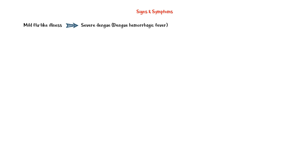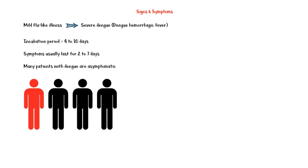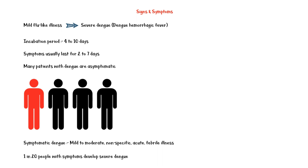The disease spectrum can range from a mild flu-like illness to a severe, life-threatening disease called severe Dengue, which was previously known as Dengue hemorrhagic fever. The incubation period of the virus is 4–10 days, and symptoms usually last for 2–7 days. Many patients with Dengue are asymptomatic — only 1 in 4 with Dengue infection become symptomatic. Symptomatic infection commonly presents as a mild to moderate, nonspecific, acute febrile illness. About 1 in 20 patients with symptomatic disease develop severe Dengue.